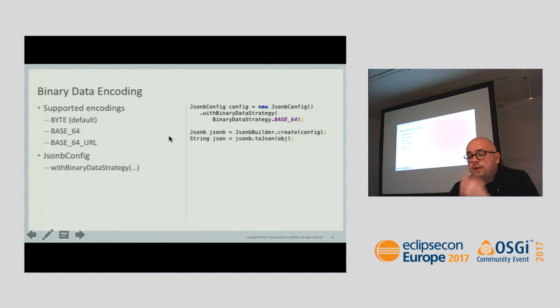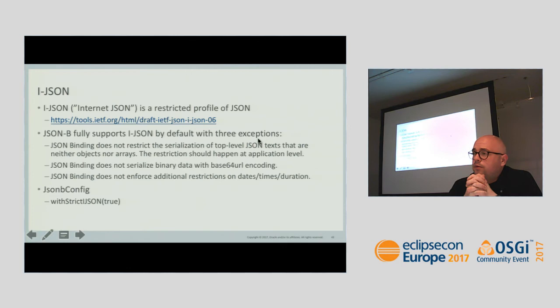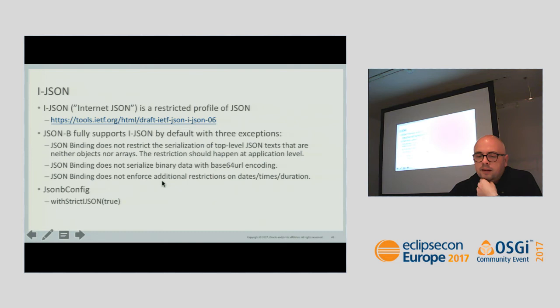Binary encoding: three strategies are supported — BYTE, BASE_64, and BASE_64_URL. You plug it in using withBinaryDataStrategy on JsonbConfig. Here's a sample: create a config with BASE_64, for instance, then create the JSONB engine and use it. This is iJSON — here is a link to read more about it. By default it's supported with three exceptions listed here. It's possible to switch on strict compliance with iJSON using JsonbConfig.